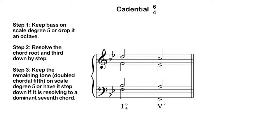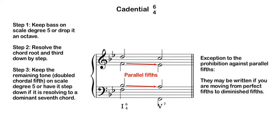If you're paying close attention, you might notice some potential part-writing errors in my example. The first is parallel fifths. If you take a look at the B-flat in the tenor and the F in the alto, they both step down to the dominant seventh chord — the B-flat steps down to the leading tone A, and the F steps down to scale degree four, the chord seventh, which is E-flat. So I have a fifth moving to a fifth. This is one of those exceptions to the rule about parallel fifths. It is okay to move from a perfect fifth to a diminished fifth, because the change of quality makes it not sound like parallel perfect fifths.